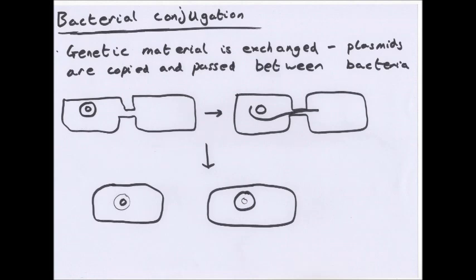Bacteria can also do bacterial conjugation - this is when genetic material is exchanged and plasmids are copied and passed between bacteria. There's a bacteria that has no plasmid and one that has a plasmid; they join together and that bit in between is called a conjugation tube. Then the plasmid splits in two: one bit will stay inside the original cell, the other bit will go into the new cell.